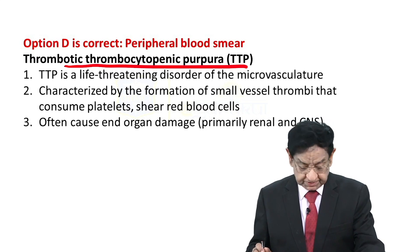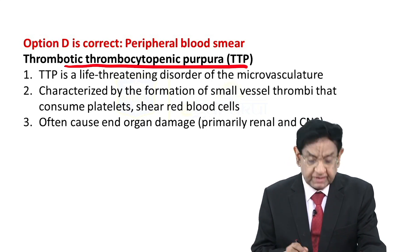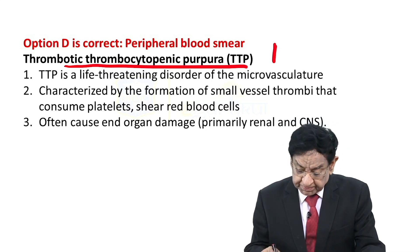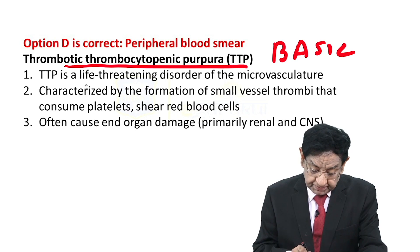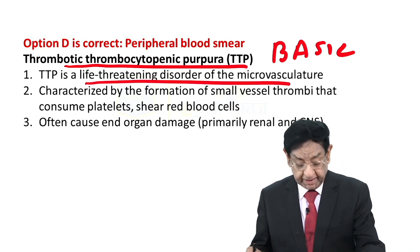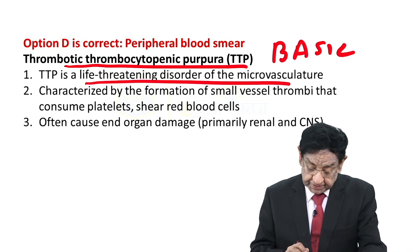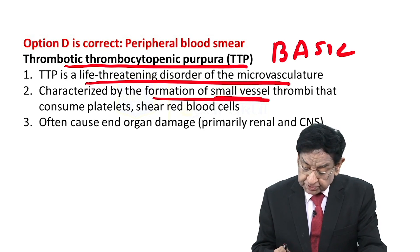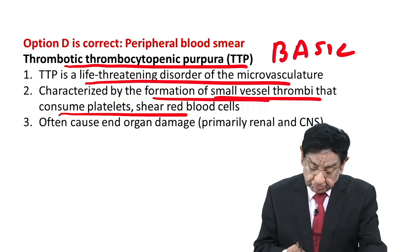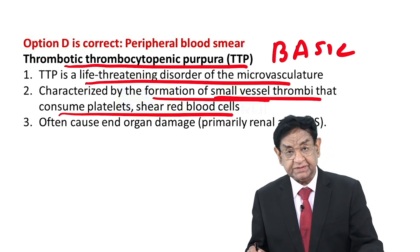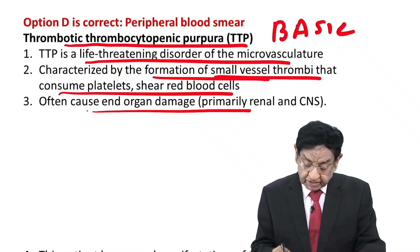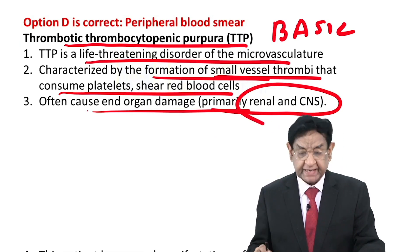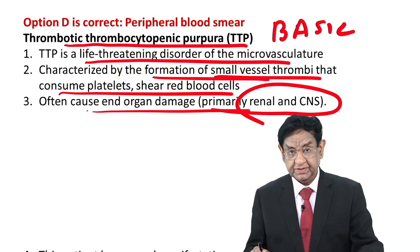How can we say that? Let's learn some basic concepts about TTP, then we will understand why this problem is present. TTP is a life-threatening disorder of microvascular musculature, and there is formation of small platelet thrombi that consume platelets and shear the RBCs.